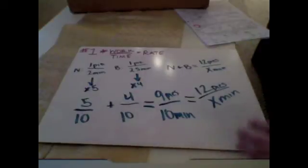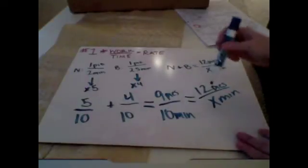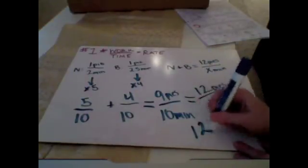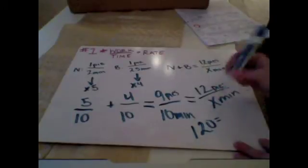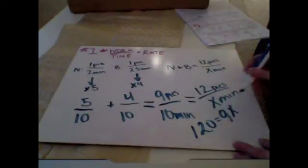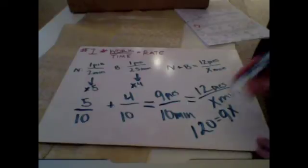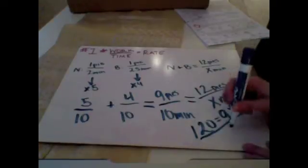And now I'm going to be cross-multiplying. So ten times twelve, we get 120. Nine times X, nine X. Now I get X by itself, all I've got to do is divide both sides by nine.